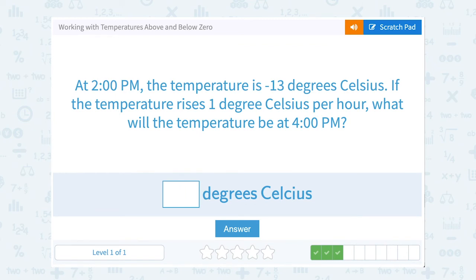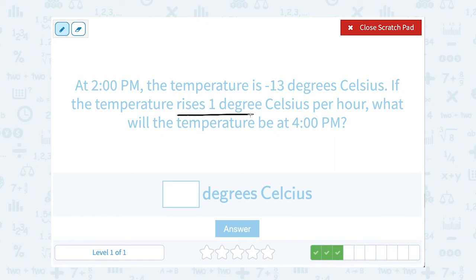At 2 p.m., the temperature is negative 13 degrees Celsius. If the temperature rises, this time it's going up one degree Celsius per hour, what will the temperature be at 4 p.m.? Well, 2 p.m. to 4 p.m., that's two hours later. So if two hours have passed, and it's going up or rising by one degree per hour, two times one, it would be rising by two degrees. So if it started at negative 13 degrees, and then it rose or went up by two degrees, we're going to say plus two, and that means it wound up to be negative 11 degrees Celsius.